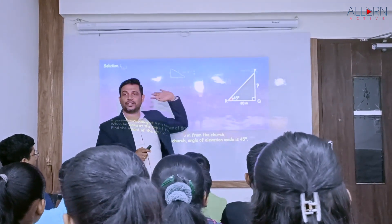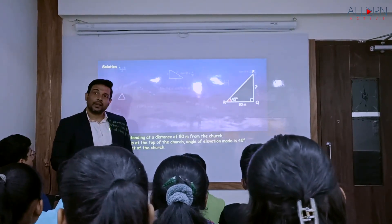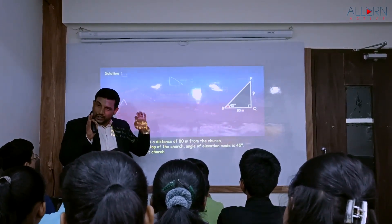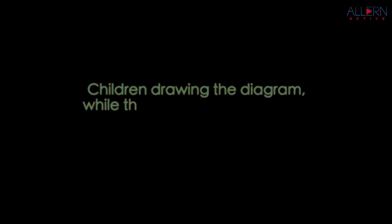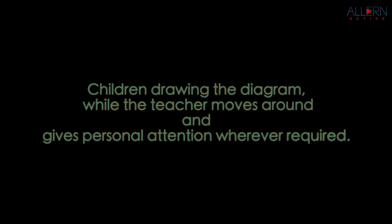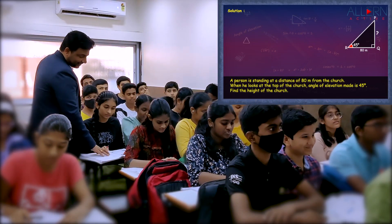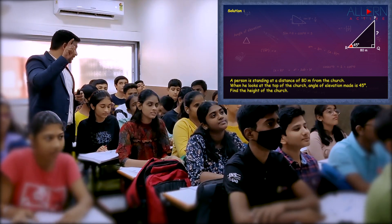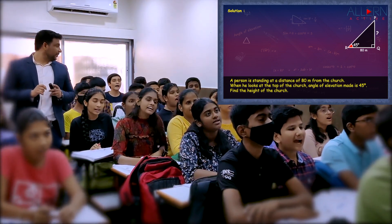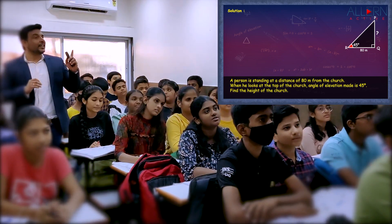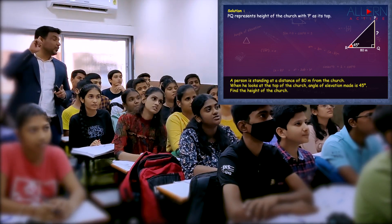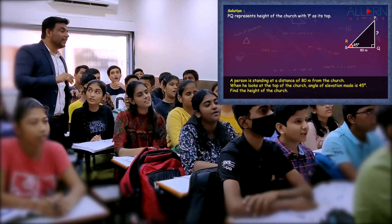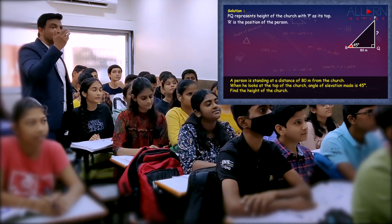On the right-hand side corner of your page - is this clear to everybody? So this is what you're supposed to draw. I want all of you to actually draw this particular triangle in your book. Now all of you have drawn the figure. The next part is describing the figure. I want you to tell me - look at this and tell me what is PQ representing? The height of the church. That means the next step we write here is: PQ represents the height of the church.